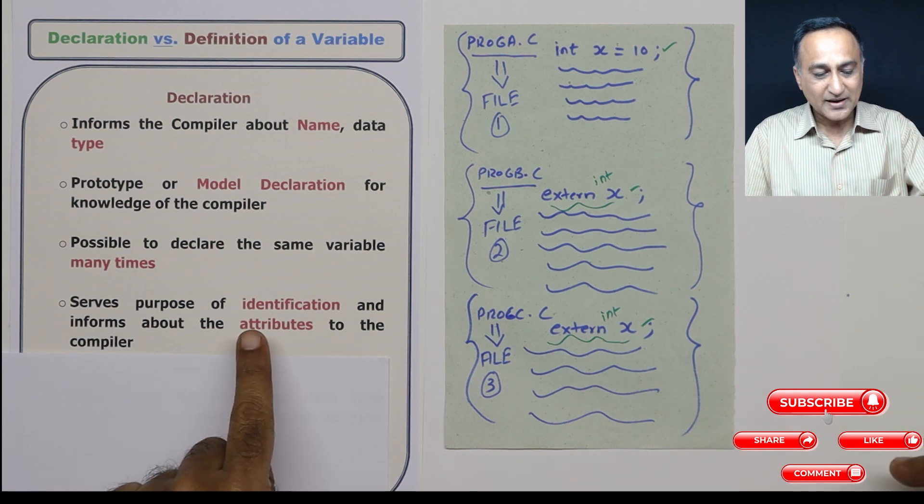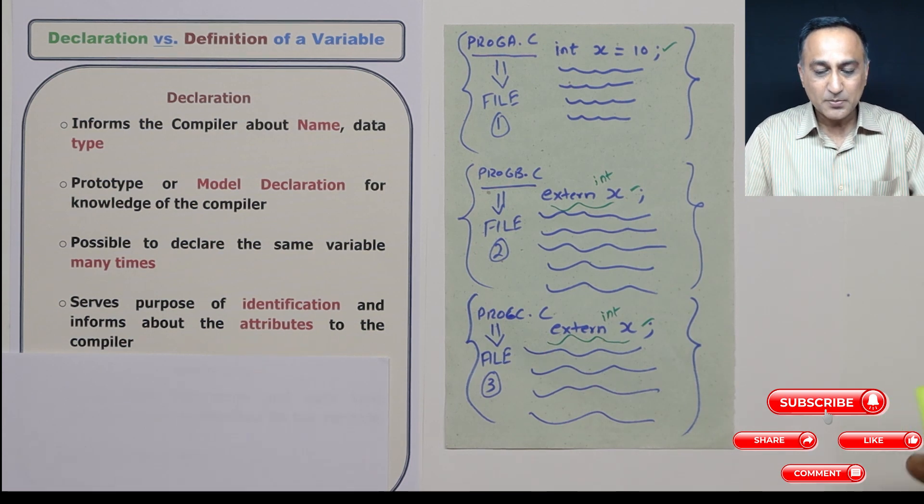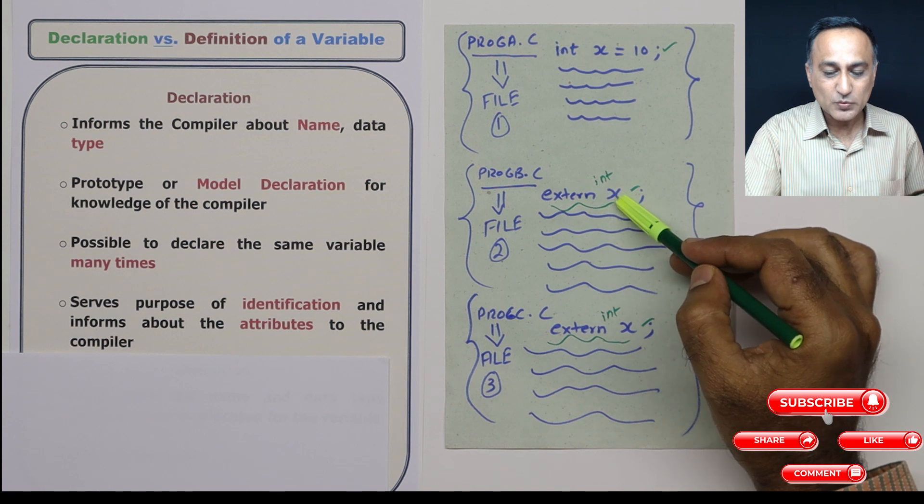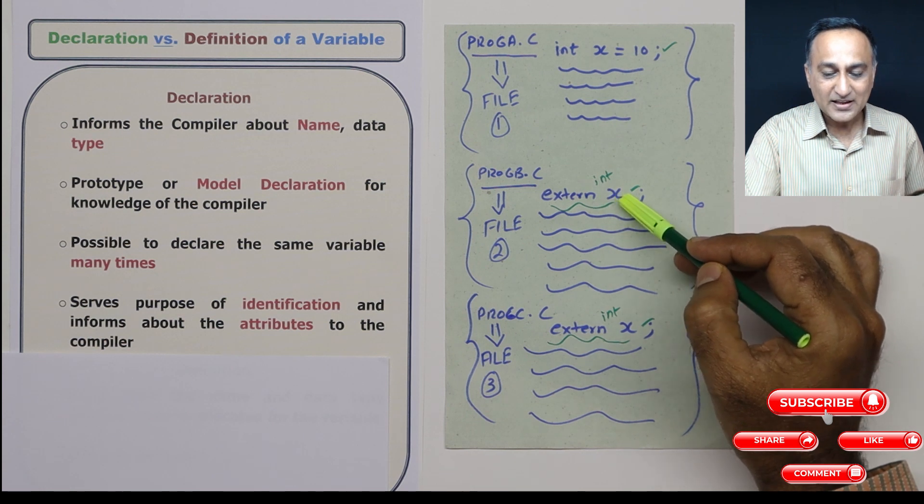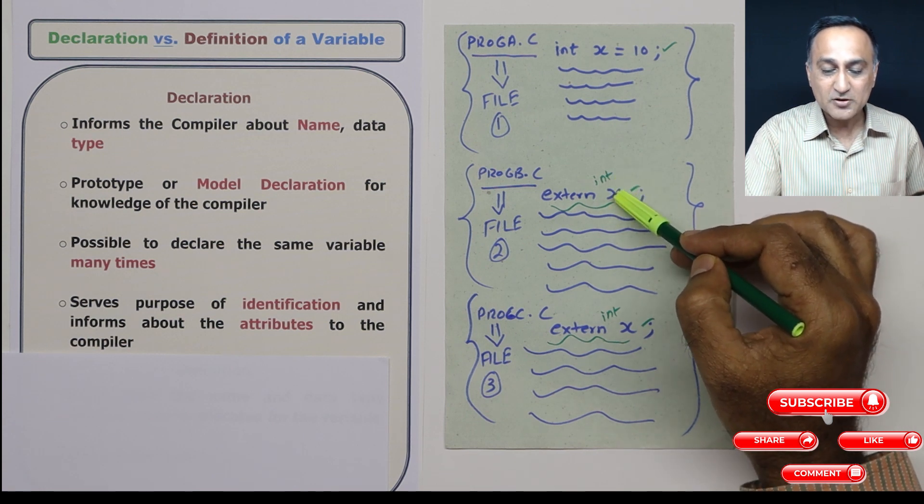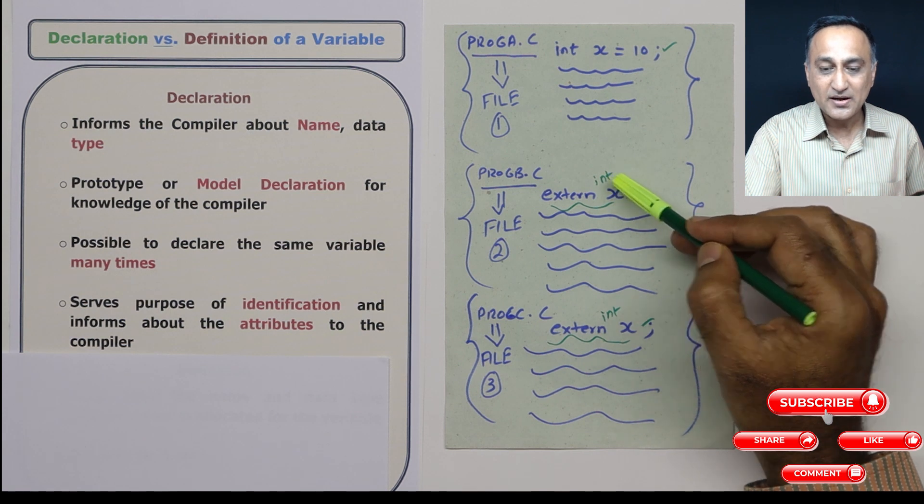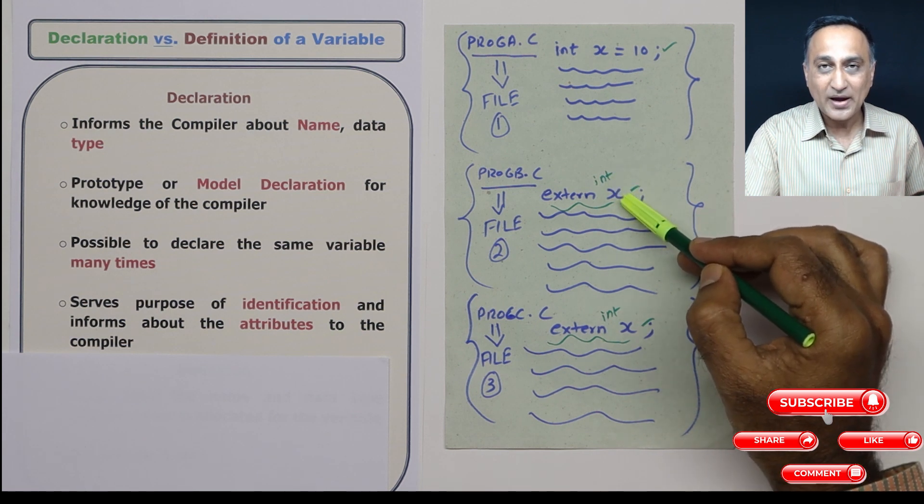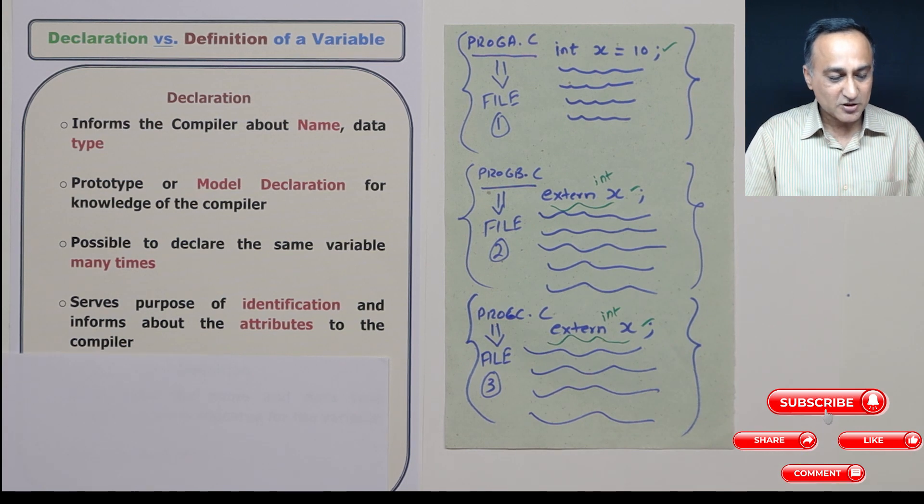The purpose of declaration is it serves the purpose of identification of this variable x to the compiler, and the compiler needs to know what are the properties of x. That means it's an integer variable, it can only accept integer values. So that's the purpose of declaration.